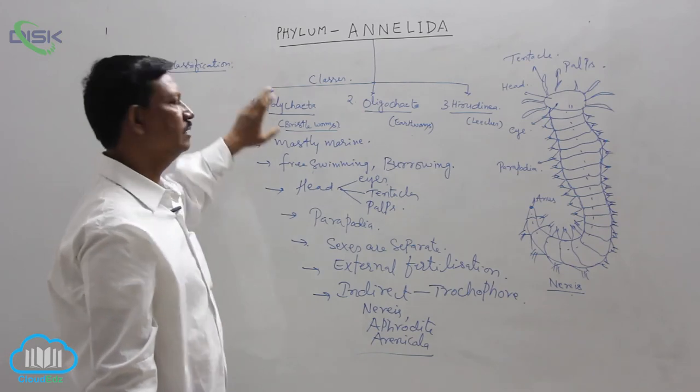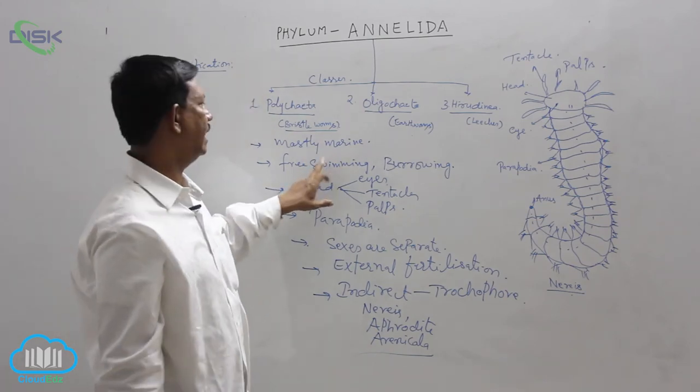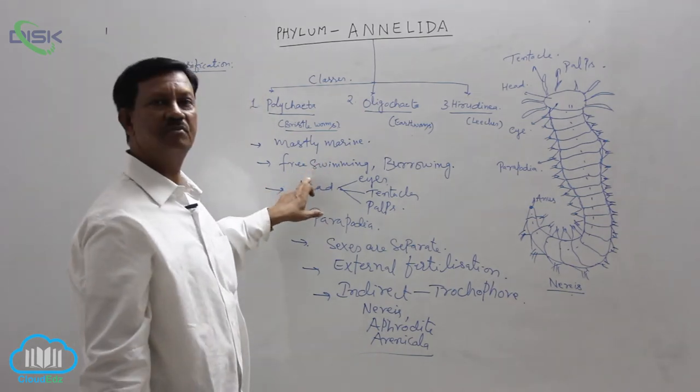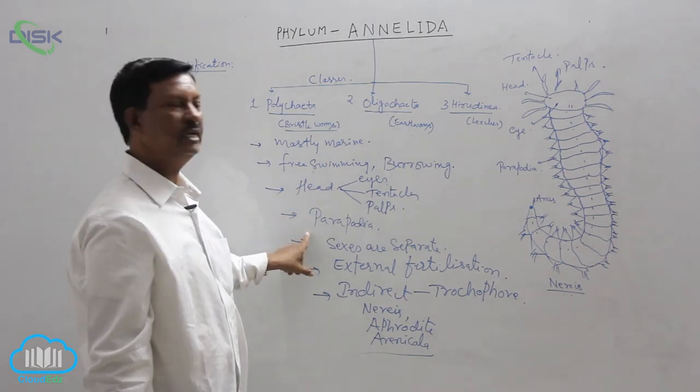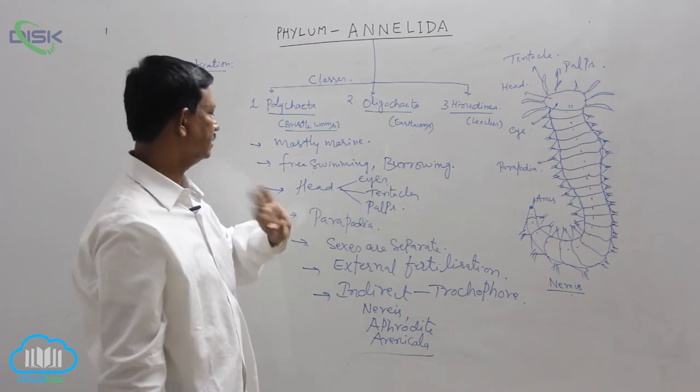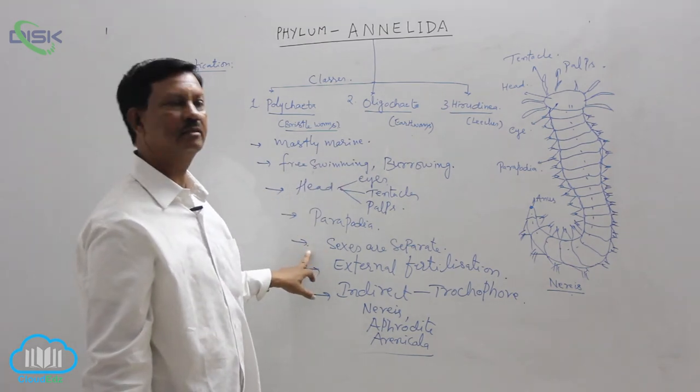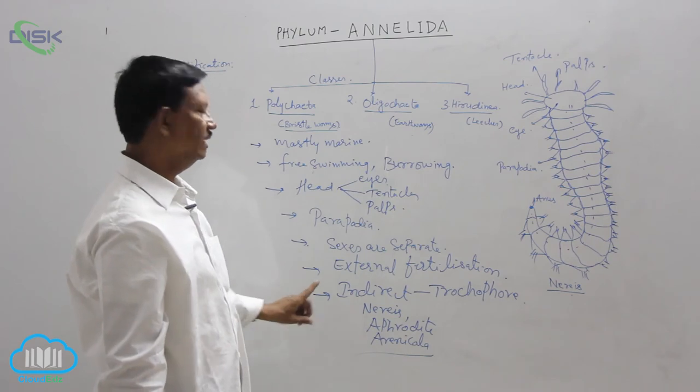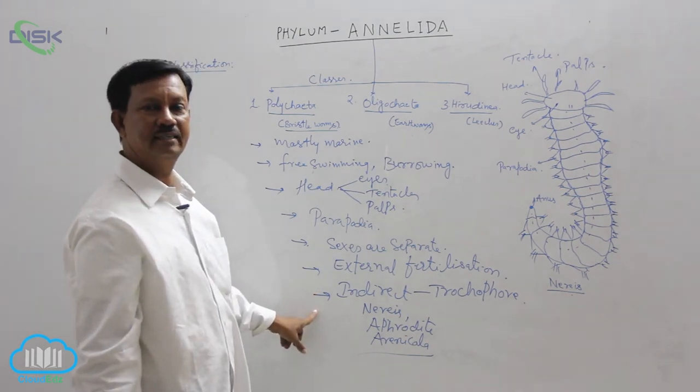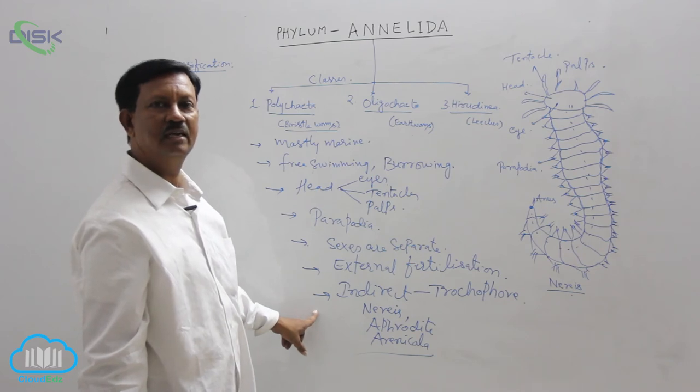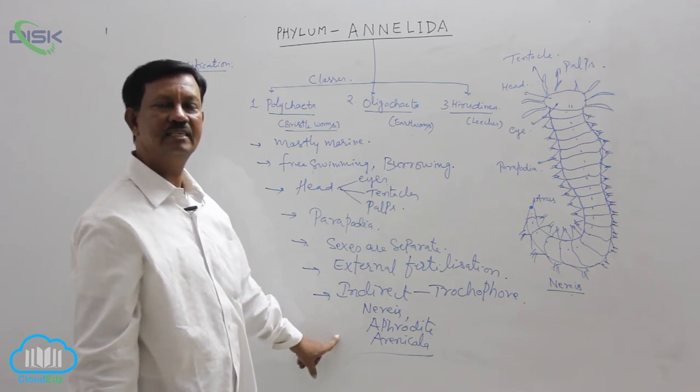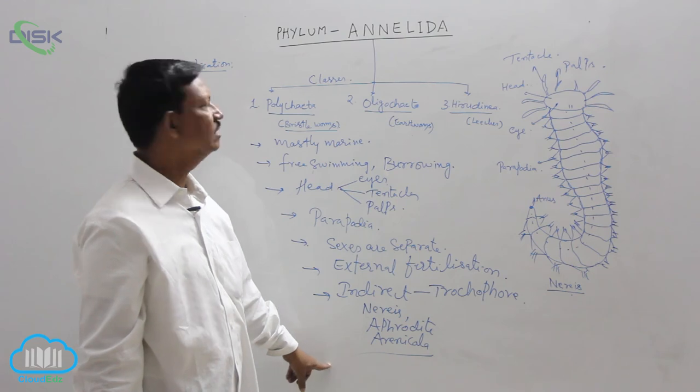The main characters of this class: mostly marine animals, free swimming. There is a distinct head present, and parapodia is present, which is absent in other classes. Sexes are separate. But in other animals, they are hermaphrodites. And development is indirect, the presence of larval form, which is known as the trochophore larva. Example is the Nereis, Aphrodite, and Omnicola.